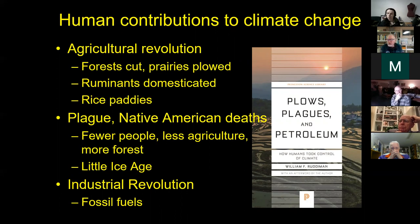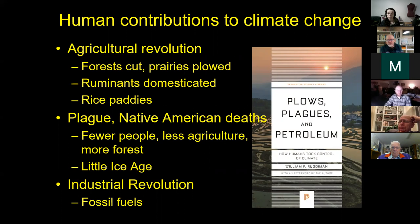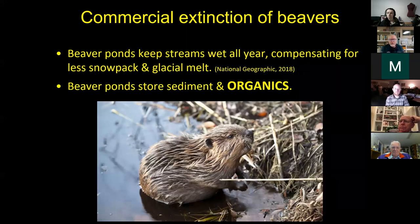I strongly recommend the book Plows, Plagues, and Petroleum by Bill Ruddiman. The agricultural revolution starting about 10,000 years ago increased the warming that was occurring naturally from the Milankovitch cycle — forests were cut, prairies were plowed, pigs and cattle were domesticated and started emitting methane, and rice paddies also put out lots of methane. Then there was a diminution of warming probably due to loss of human life, less agriculture, and more forest — which brought on the Little Ice Age. Then came the industrial revolution with fossil fuels, which is the number one thing causing what's going on today.